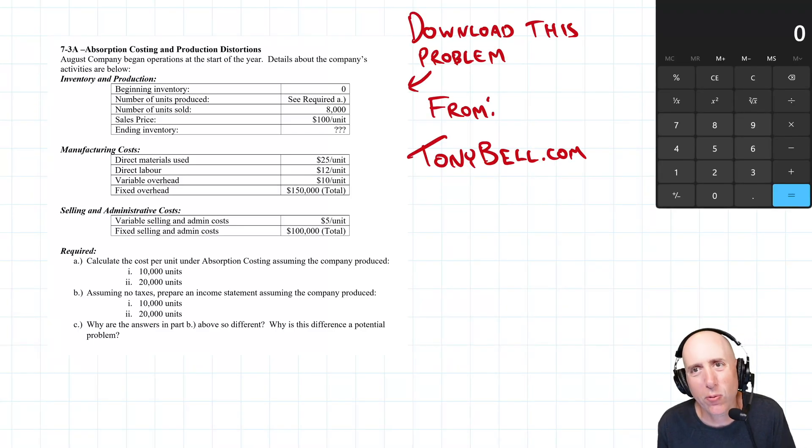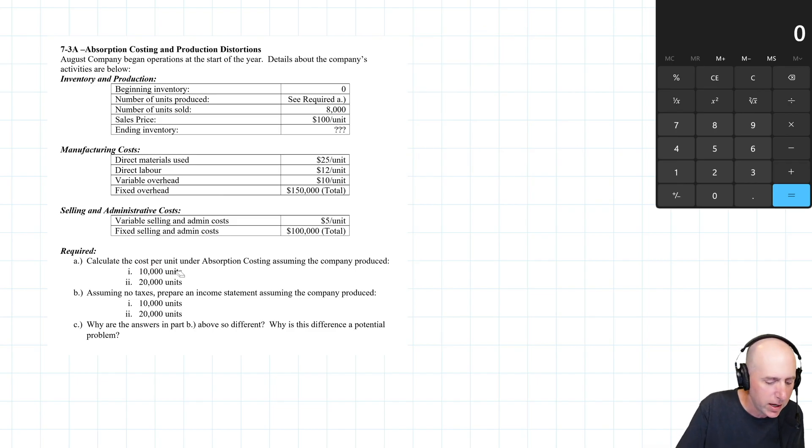Let's take a look at problem 73a, a very interesting problem. What we're going to do in this problem is have the company sell 8,000 units and look at what happens if that year they produce 10,000 units. What does their cost and income statement look like?